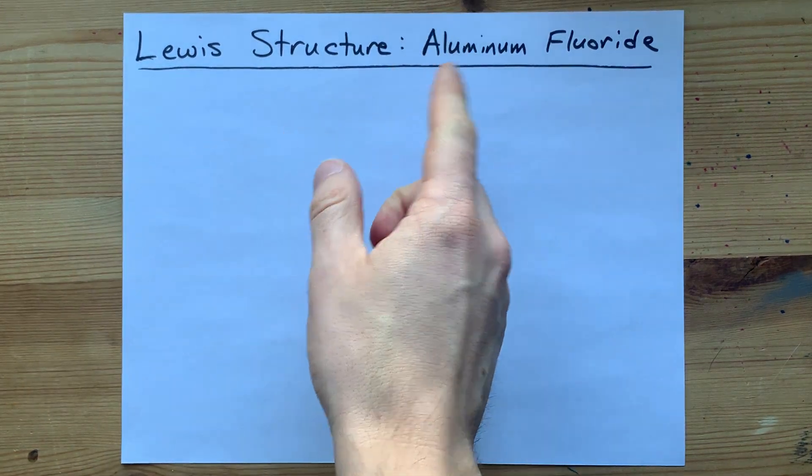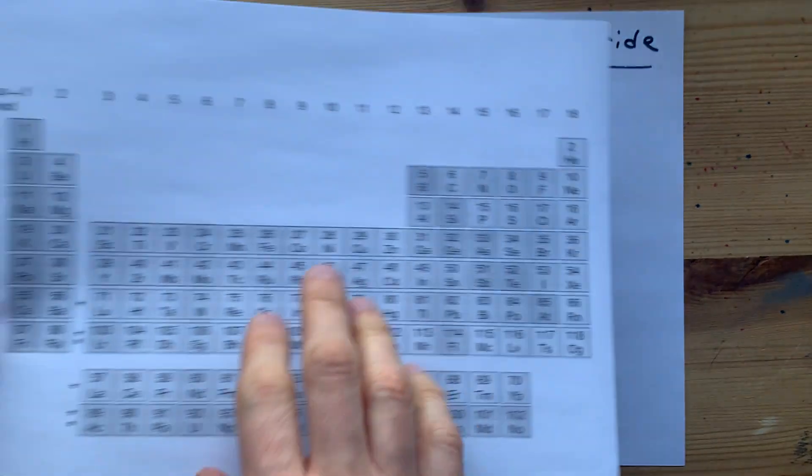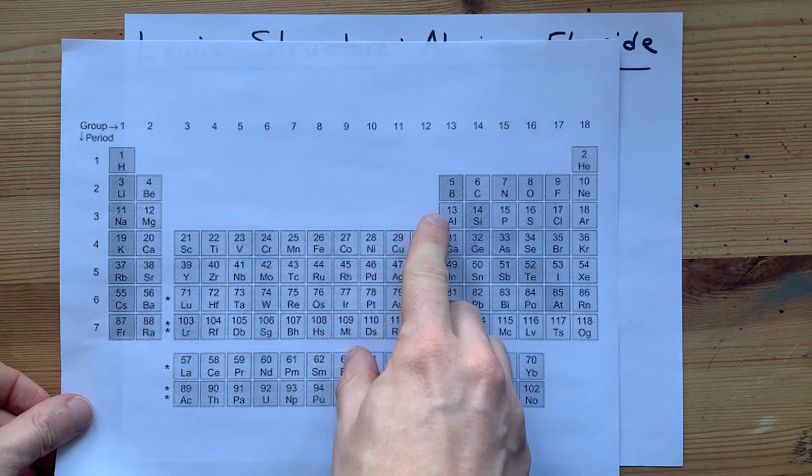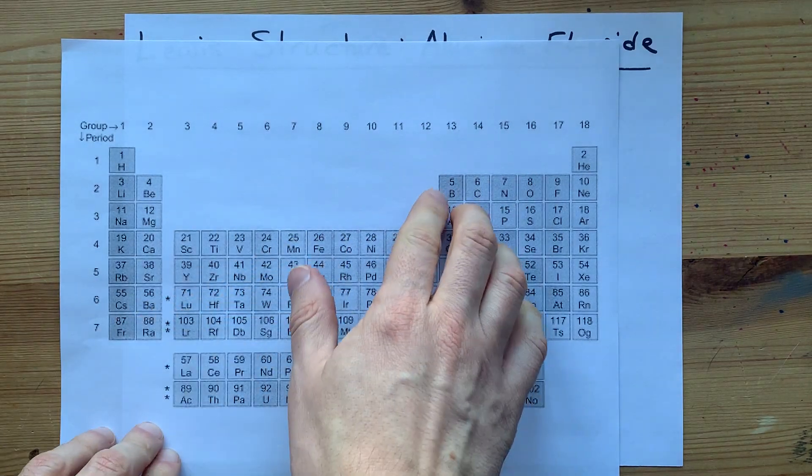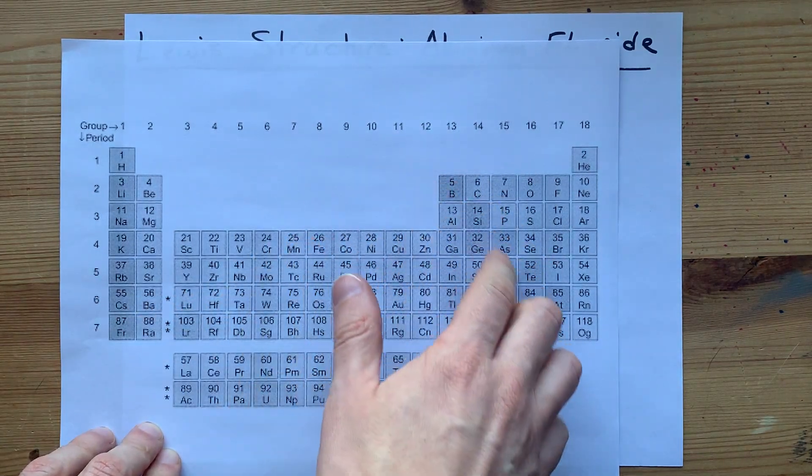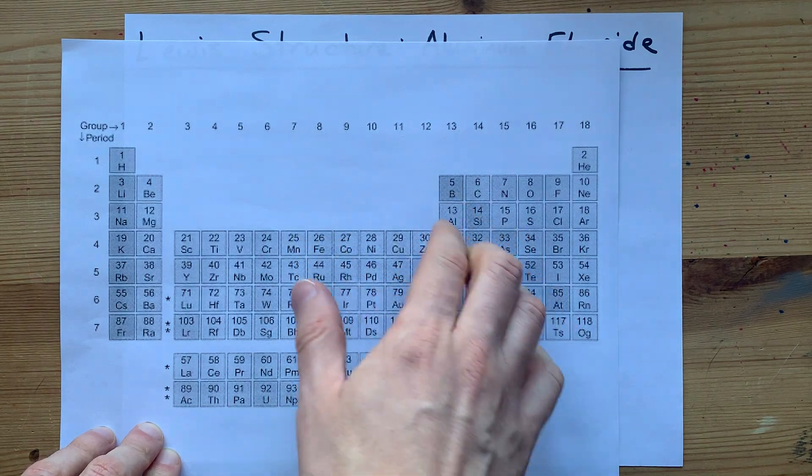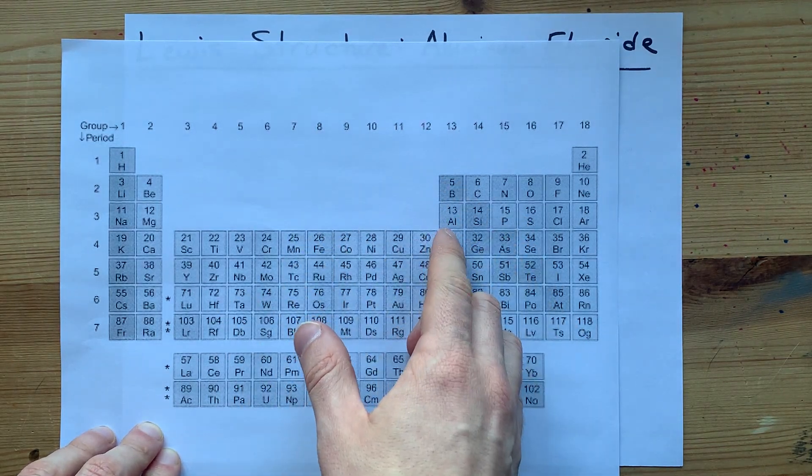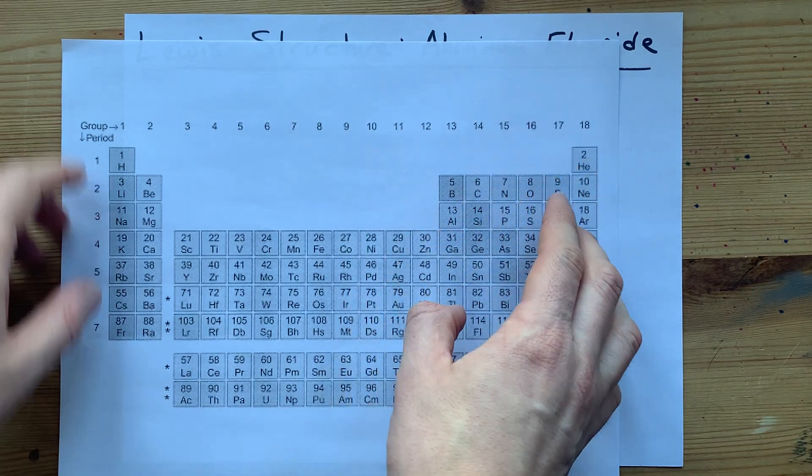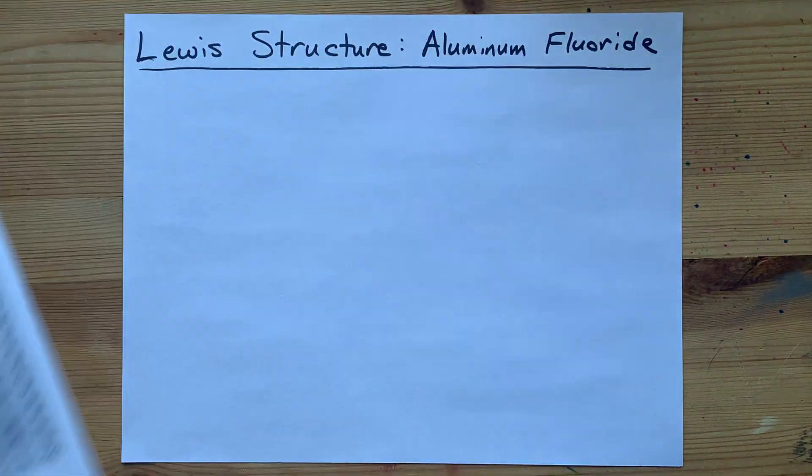The Lewis structure of aluminum fluoride is pretty straightforward once you realize that aluminum is a metal. It's on the left-hand side of the semi-metal staircase, so it is a metal. Fluorine is on the right-hand side of the staircase, which makes it a non-metal.